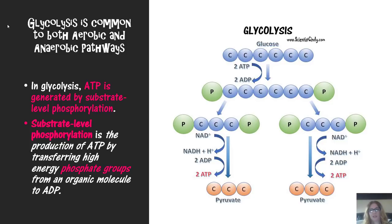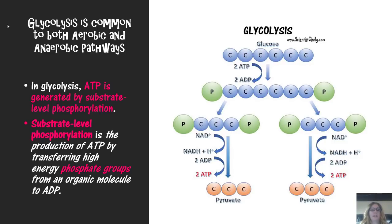We begin cellular respiration with the process of glycolysis. Glycolysis is common to both aerobic and anaerobic pathways — we'll talk about anaerobic pathways later. In glycolysis, ATP is generated by what is called substrate level phosphorylation.